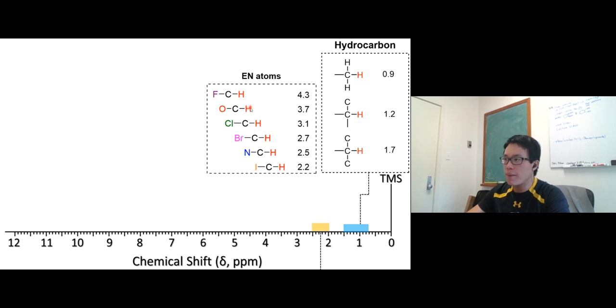So 3.7 for a proton next to the carbon, then next to the oxygen. Directly attached to the oxygen. Basically, the whole thing here, electronegative atoms show up about 3 to 4.